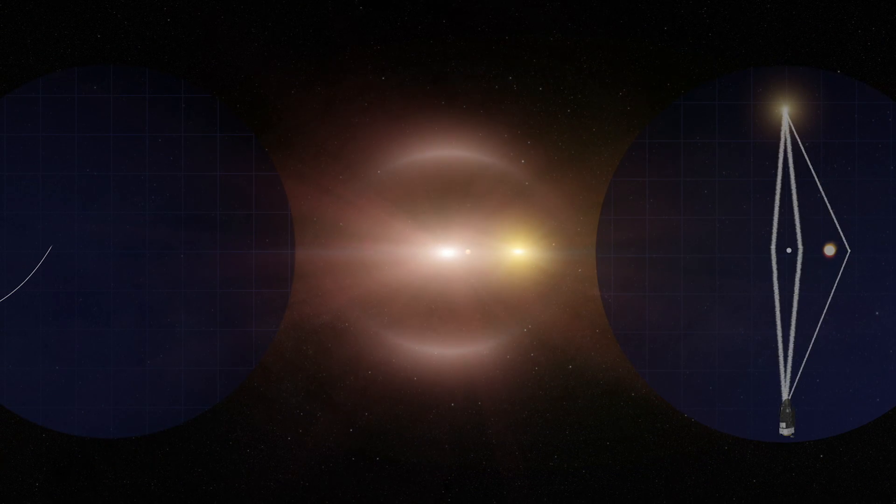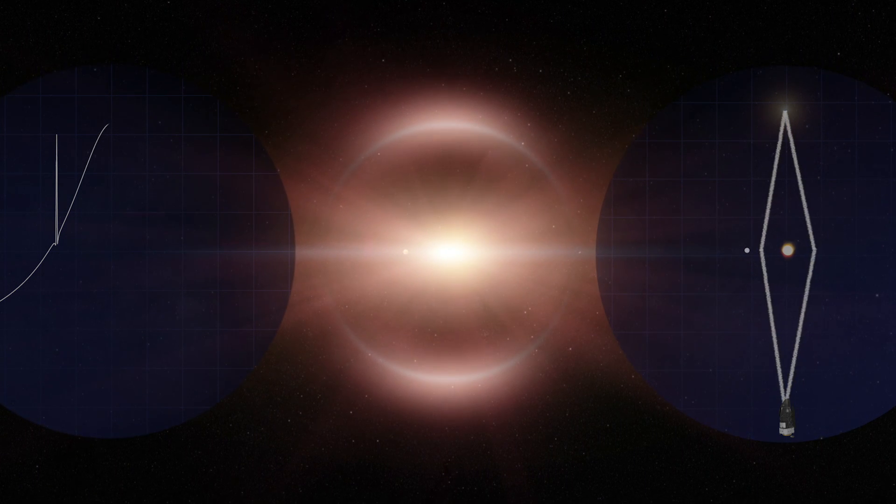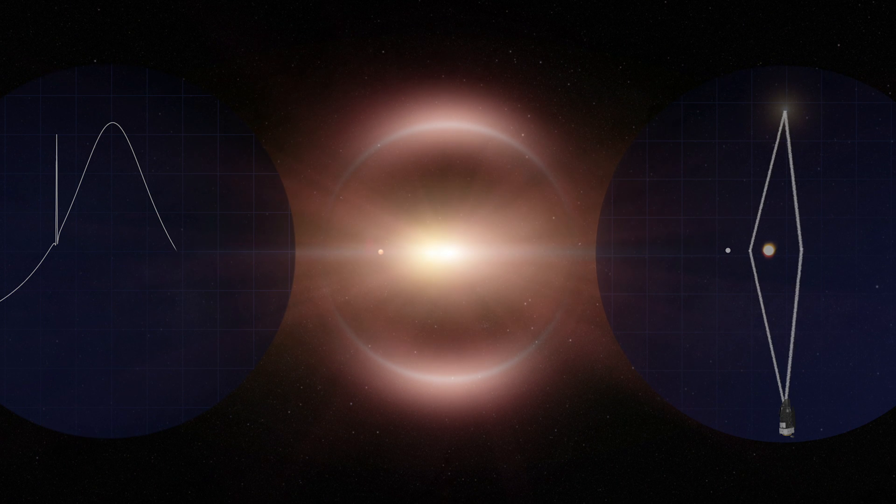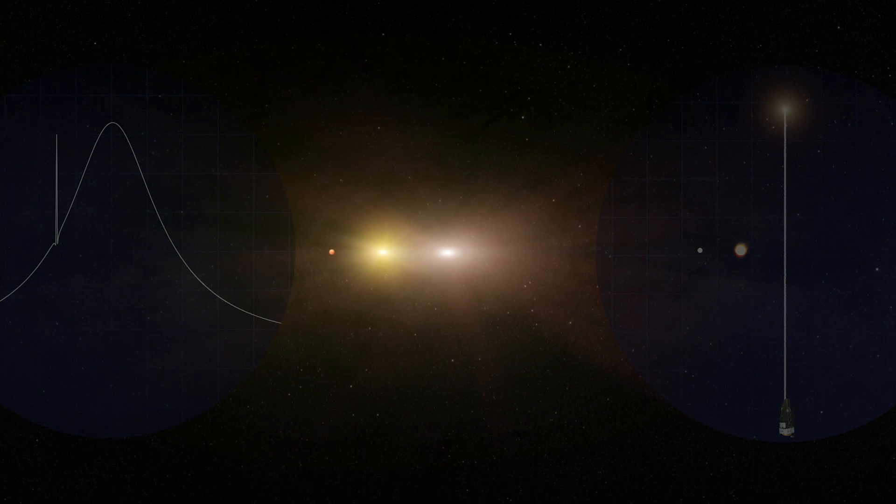If the lensing star hosts a planet, the planet's gravity can produce a noticeable change in brightness over a few hours or days. This spike signals not only the planet's presence, but tells us its mass and distance from the star.